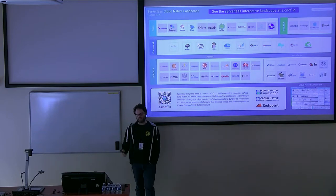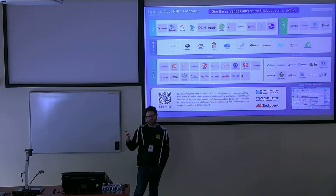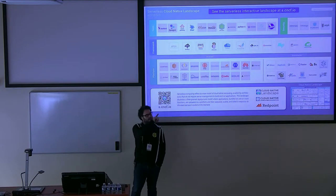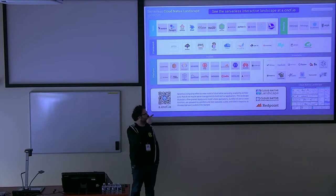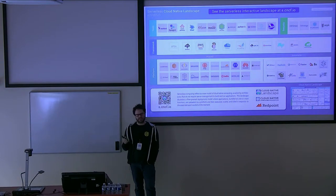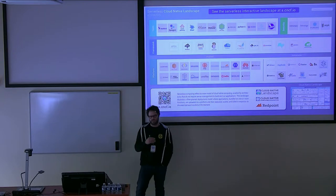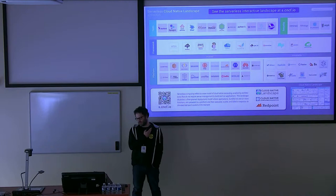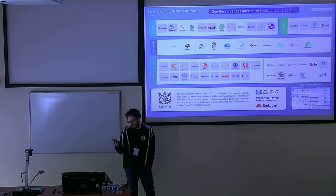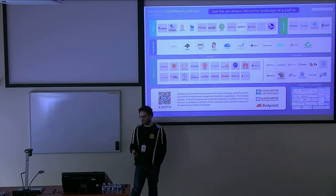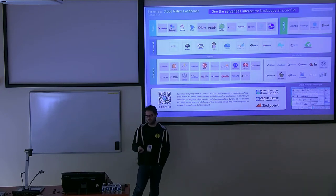This is the serverless landscape. You can see an up-to-date version of this map at s.cncf.io. This is part of the bigger cloud-native landscape that many of you probably already know. It lists all the available platforms, frameworks, and tools to implement serverless and FaaS. There is a project from AWS, there should be OpenWhisk somewhere, and there are a lot of vendors and projects participating in this Cloud Native Computing Foundation landscape.